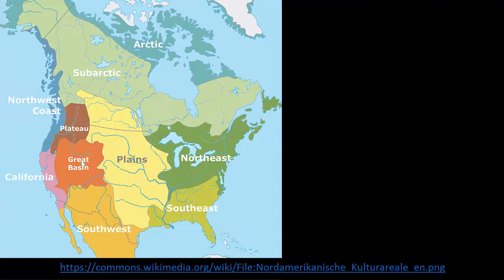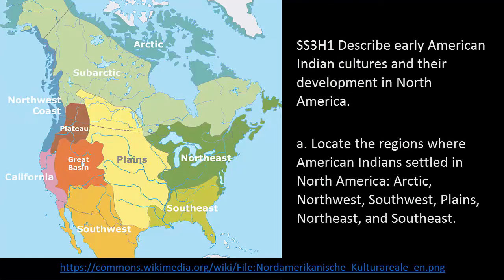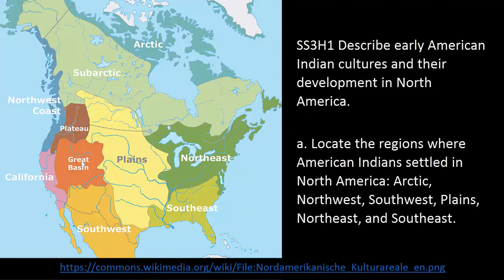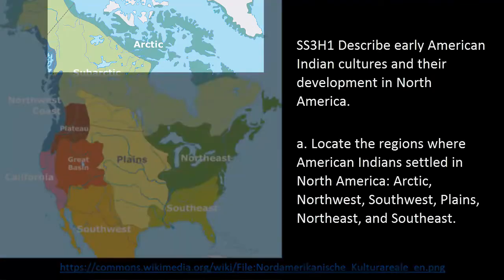Let's begin by looking at the regions listed in Element A of this standard. This element simply asks students to locate the regions, but the important impact of the geography and environment of each region is addressed in other elements and in the related geography standard. Many maps of North America break down American Indian cultural regions into a few more areas. When looking at this map, you can clearly identify the Southwest, Plains, Northeast, and Southeast regions. However, the Arctic and Northwest regions could expand to include some regions labeled separately on most maps. In these videos, we will discuss tribes that lived in the regions specifically identified as the Arctic and the Northwest Coast.